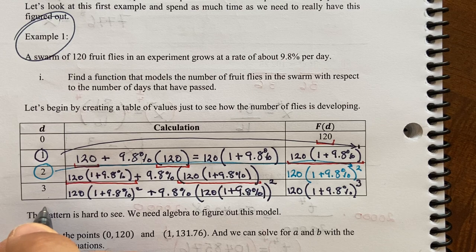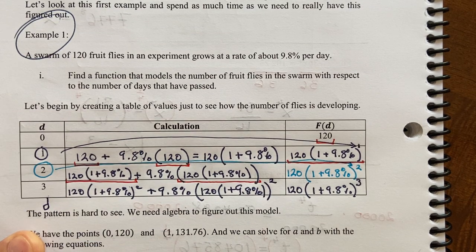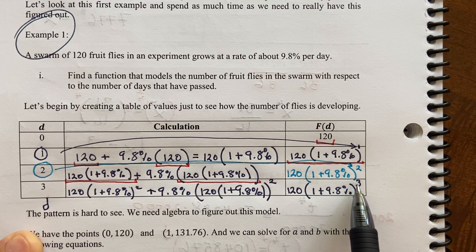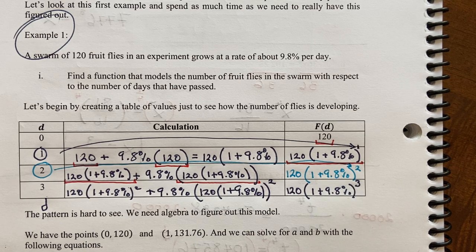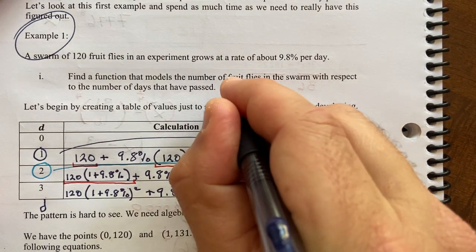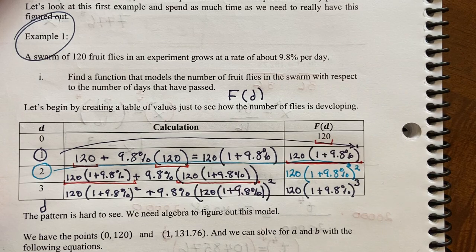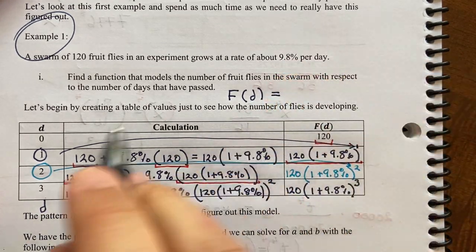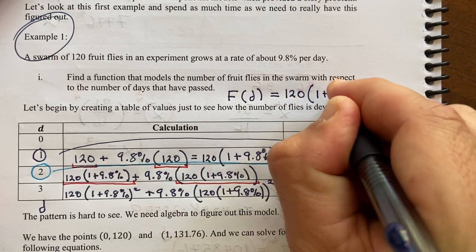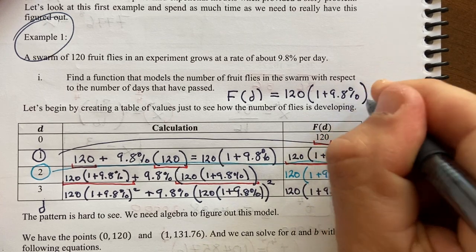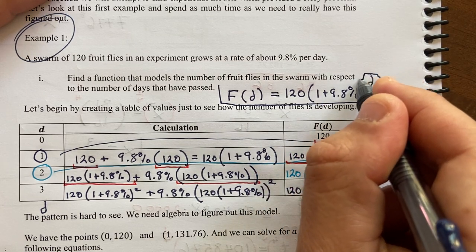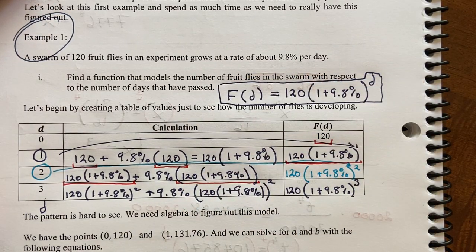Factor out the squared and you get another copy of 1 plus 9.8%, and that would make this cube. So if you extend this to some d number of days, you're going to have exactly this except raised to the d. The number of fruit flies as a function of the days would be 120 times 1 plus 9.8% raised to the d. So this is one way of finding it using this pattern recognition method.